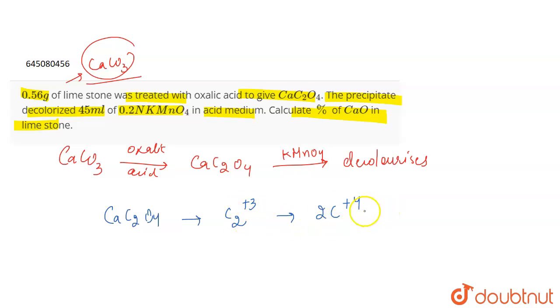It changes by releasing 2 electrons. Since it's not stable, it changes to 2C+4 plus 2 electrons. Therefore, if we talk about the valency factor,